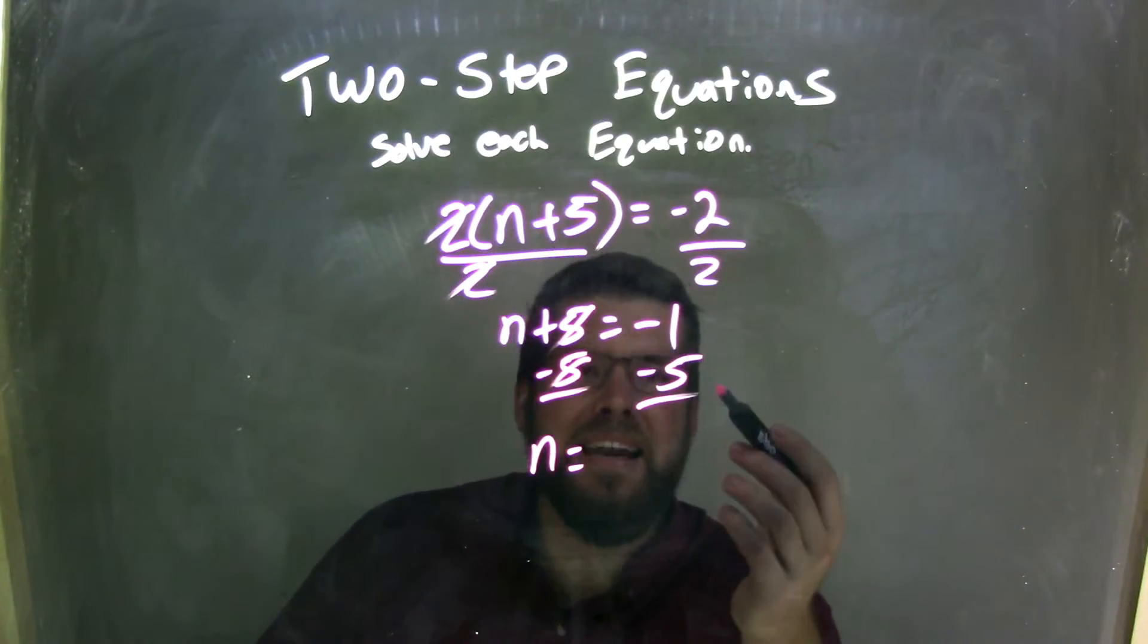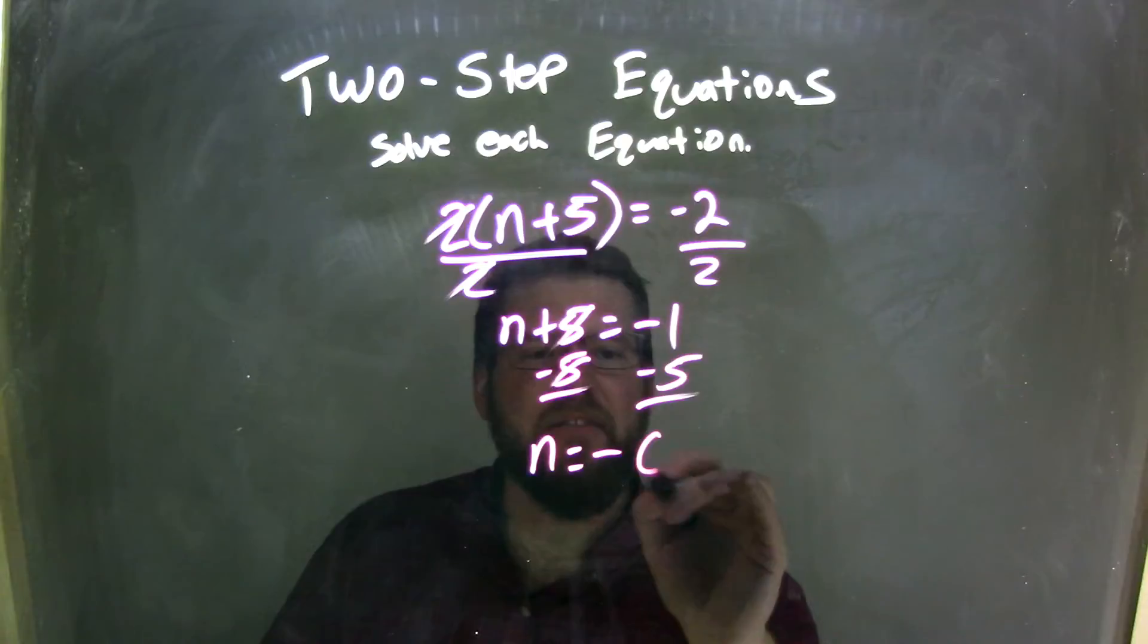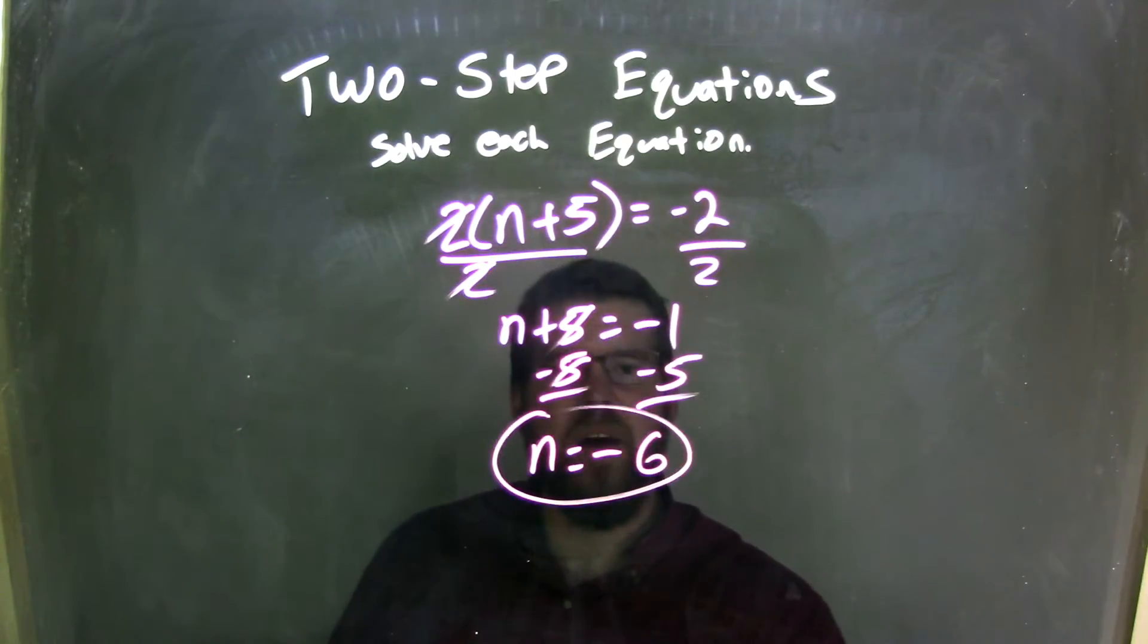I didn't have to write that anymore, and negative 1 minus 5 is more negative, which is a negative 6, and so n equals a negative 6 is my final answer.